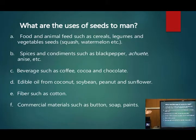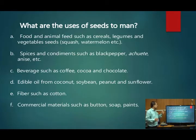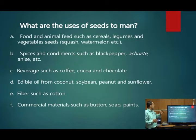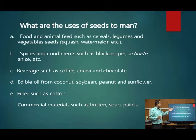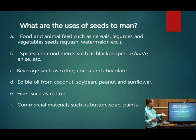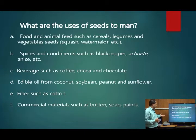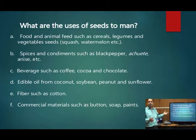Seeds are advantageous and useful to humans for the purpose of food and feed — such as cereals, legumes, and vegetable seeds. Spices and condiments like black pepper are used for kitchen purposes. Beverages such as coffee, cocoa, and chocolates. Edible oil — coconut, soybean, peanuts and flour. Fibers such as cotton. Commercial materials such as buttons, soap, bands, etc. These are some of the uses of seeds. Generally, seeds are used in agriculture for the production of food for humans.